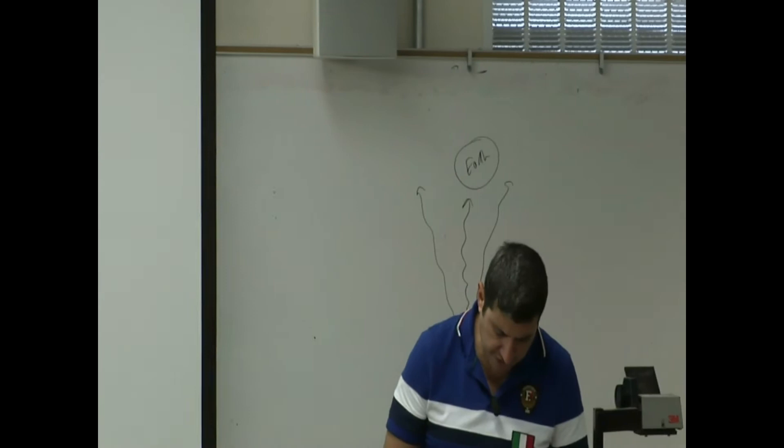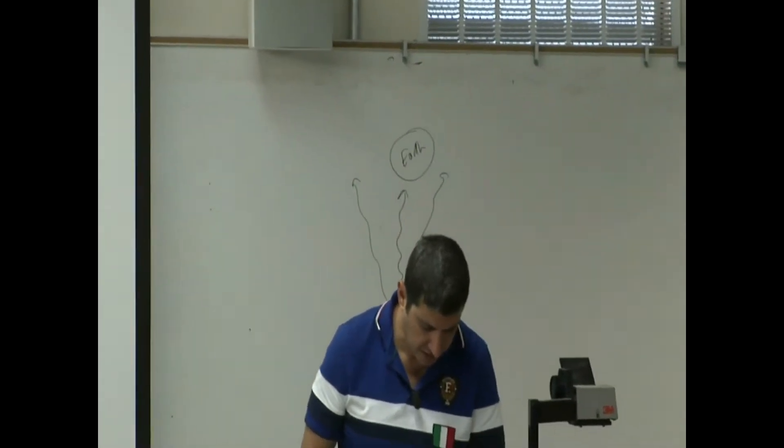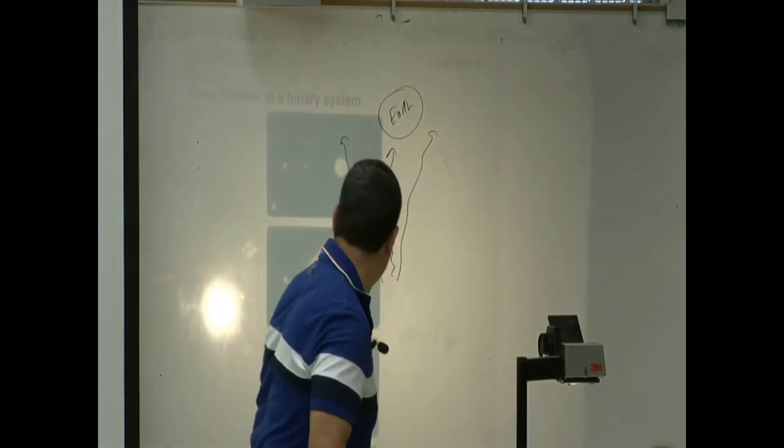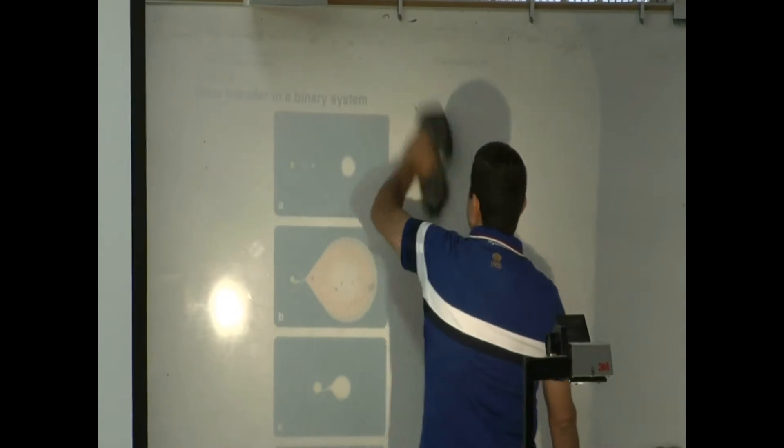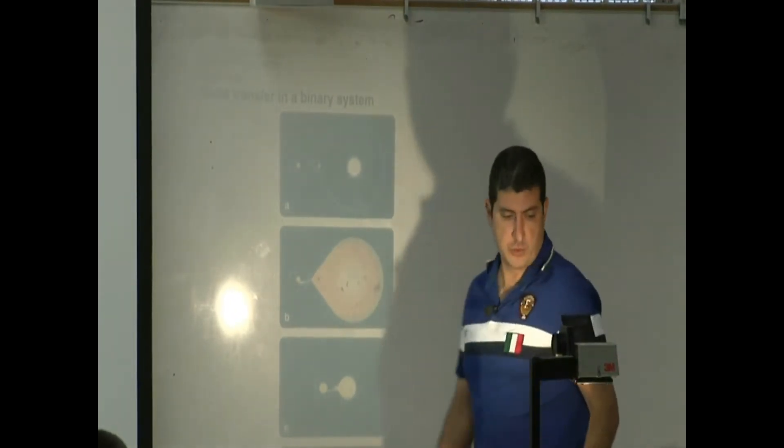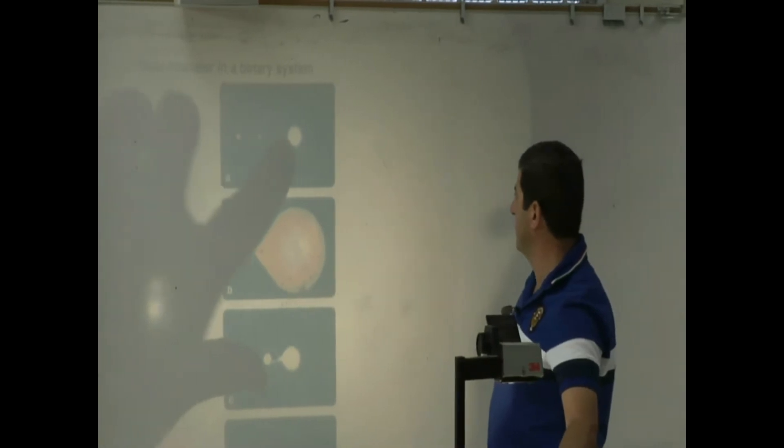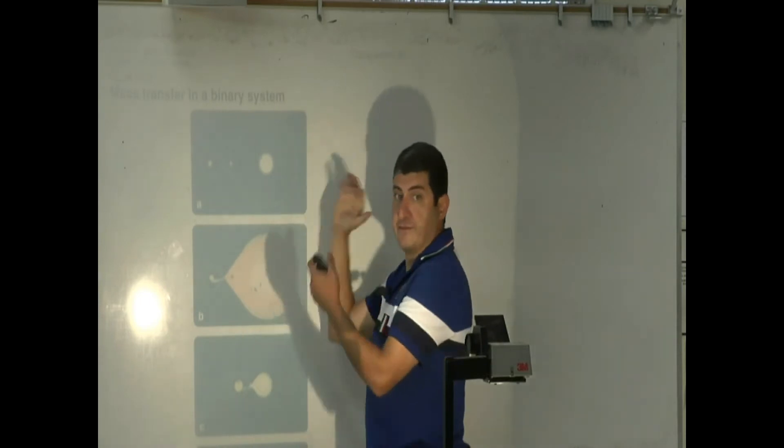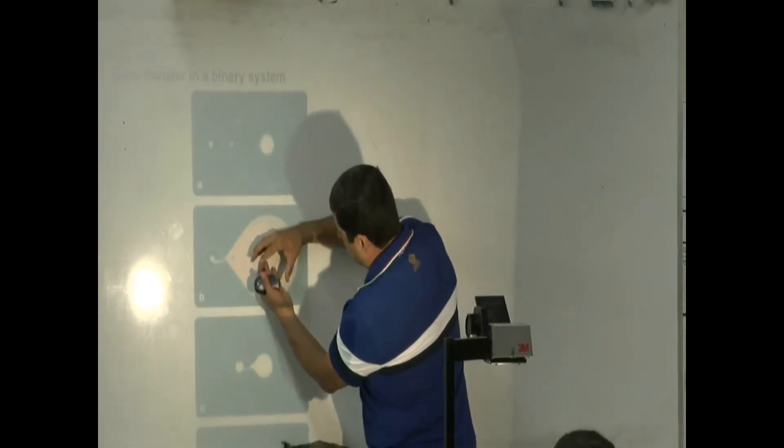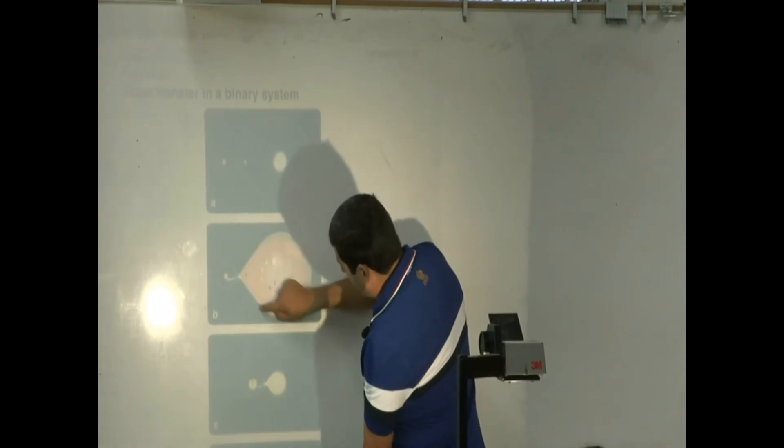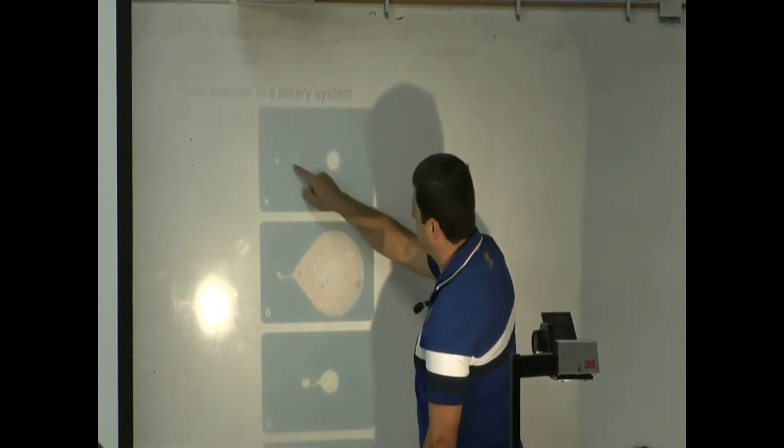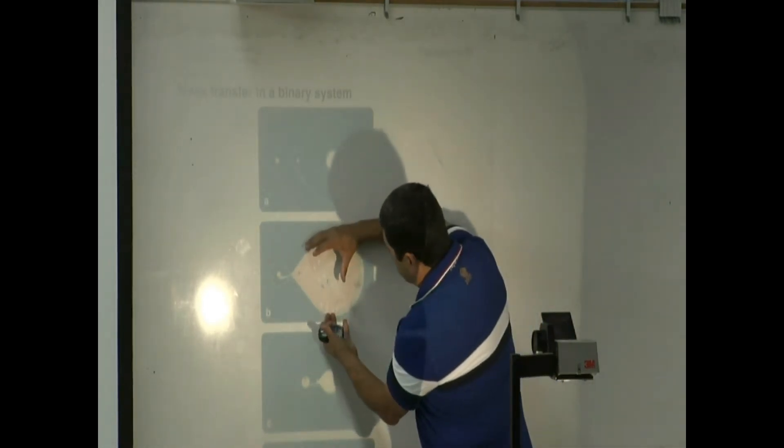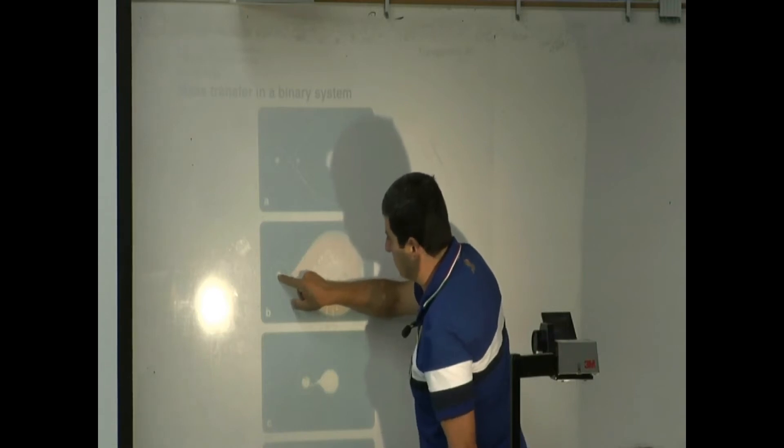So the mass transfer takes place something like this. We expect that you have two stars, for example. This one happens to be the heavier one, so it's going to die first. It's going to become a red supergiant. It's going to start filling. This is known as its Roche lobe. So this empty, this invisible region around the star.